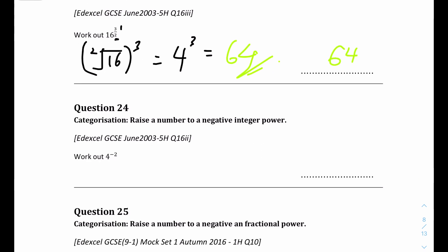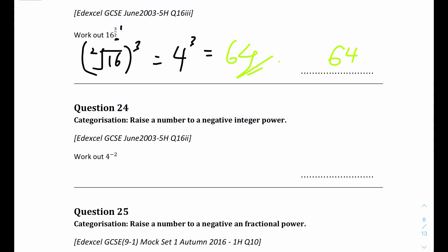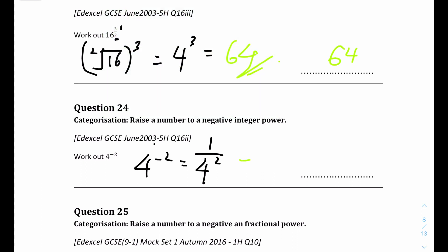Question 24: work out 4 to the power of minus 2. To get rid of the negative power, we take the reciprocal: 1 over 4 squared, which equals 1 over 16. The answer is 1 over 16.